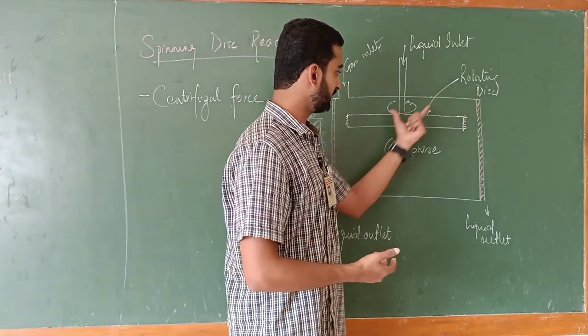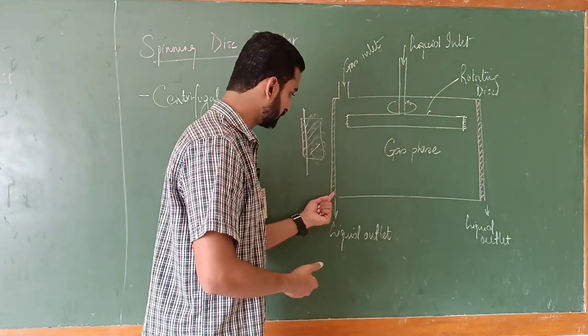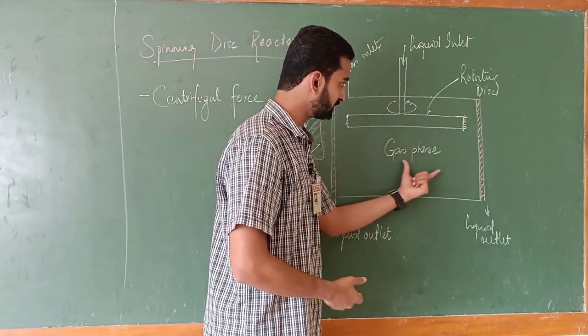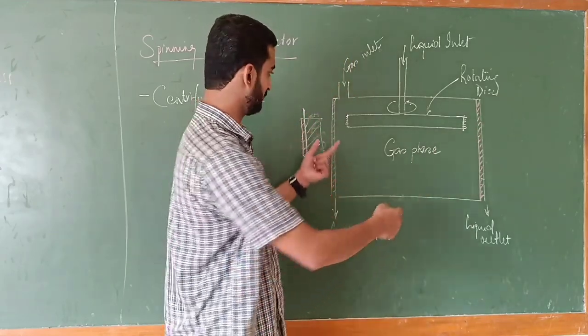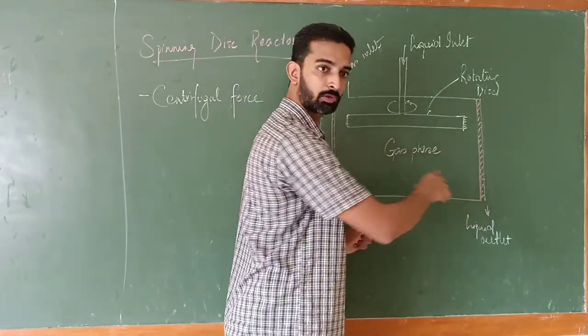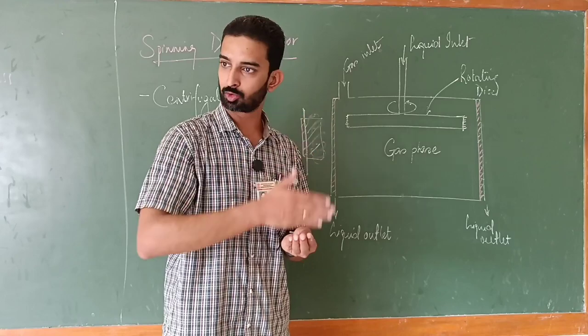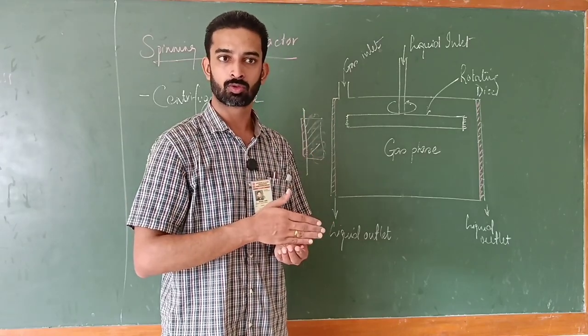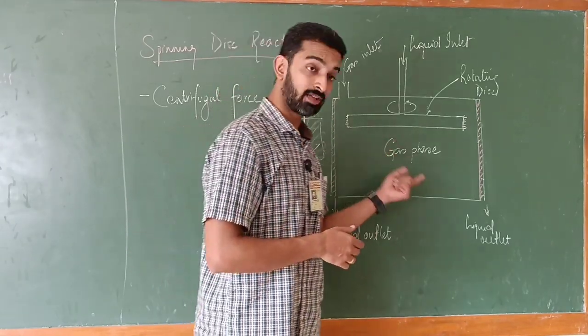So this is the rotating disk, this is the liquid film, this is the gas space. I hope you understand why I have drawn the film on both the sides - because it is a cylinder. I have shown you the cross-sectional view. The same thing you can understand for the normal situation of heat transfer also.